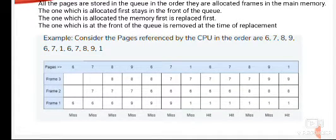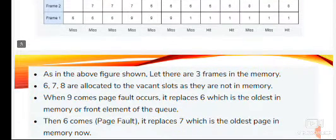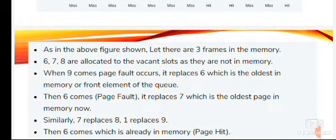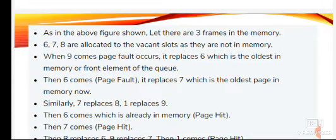Consider the pages referenced by the CPU in the order 6, 7, 8, 9, 6, 7, 1, 6, 7, 8, 9, 1. Here we have taken 3 frames — frame 1, frame 2, and frame 3. As shown in the figure, pages 6, 7, and 8 are allocated to the vacant slots as they are not in memory. When 9 comes, a page fault occurs and it replaces 6, which is the oldest page in memory — the front element of the queue.